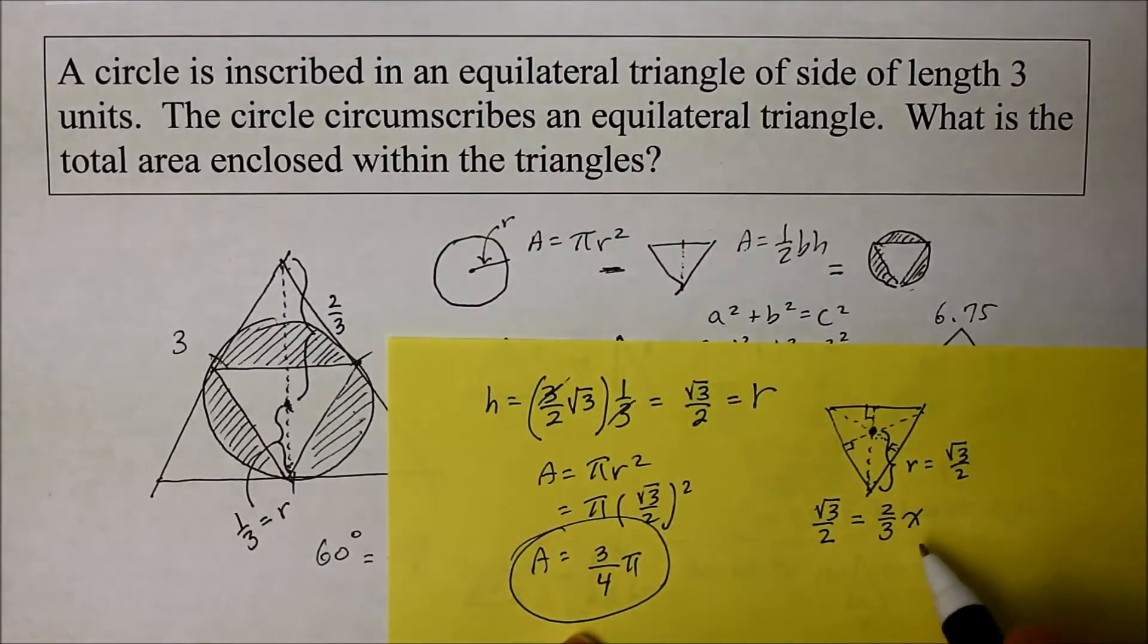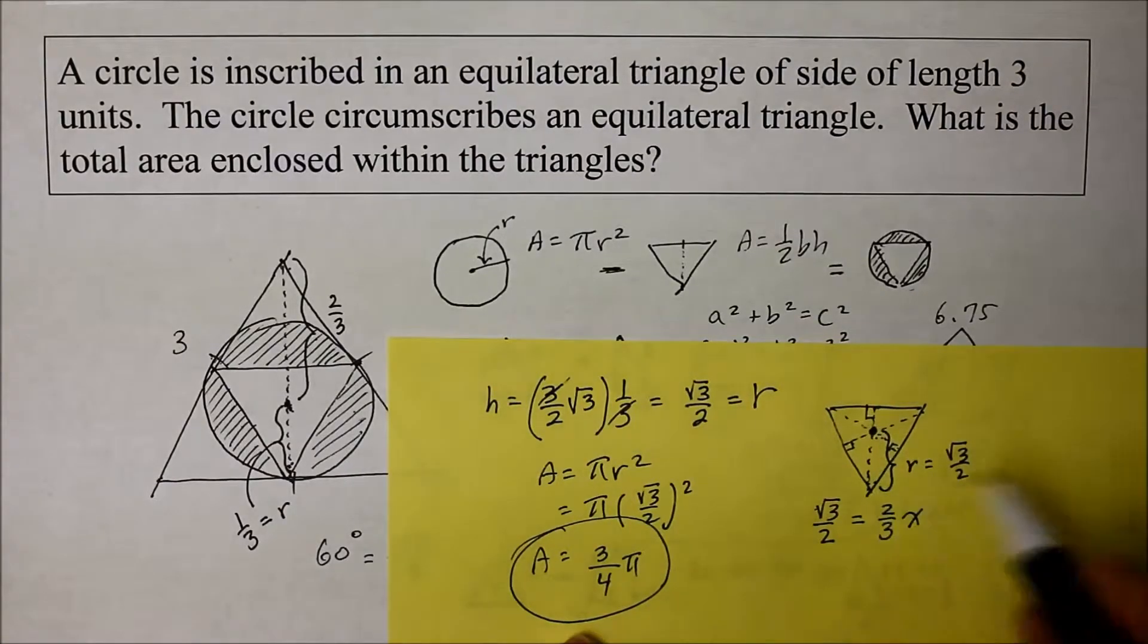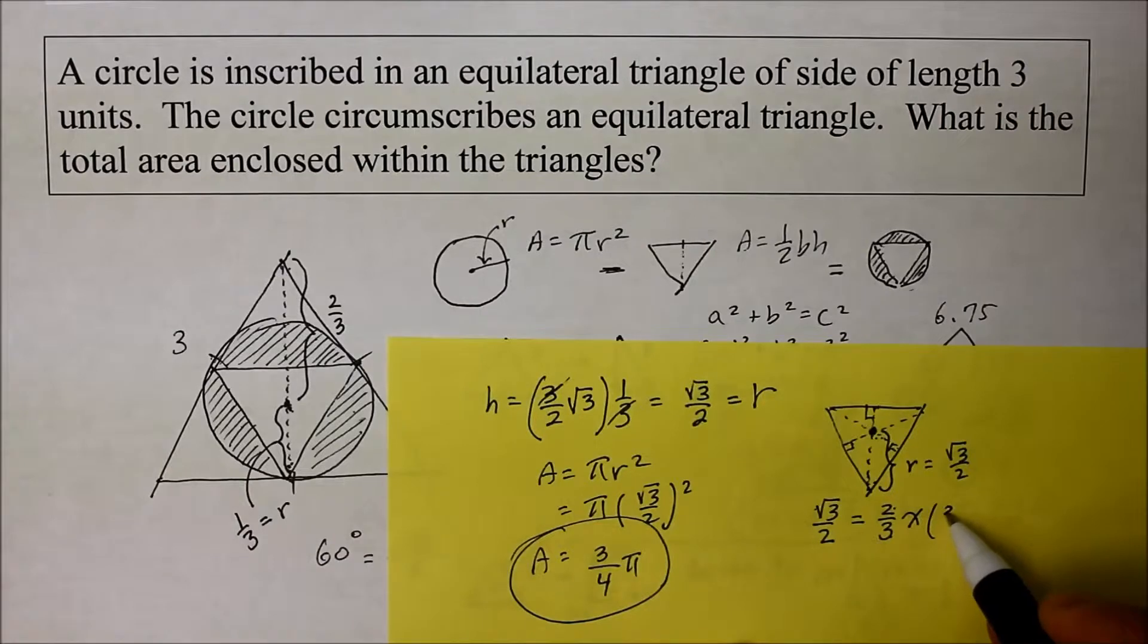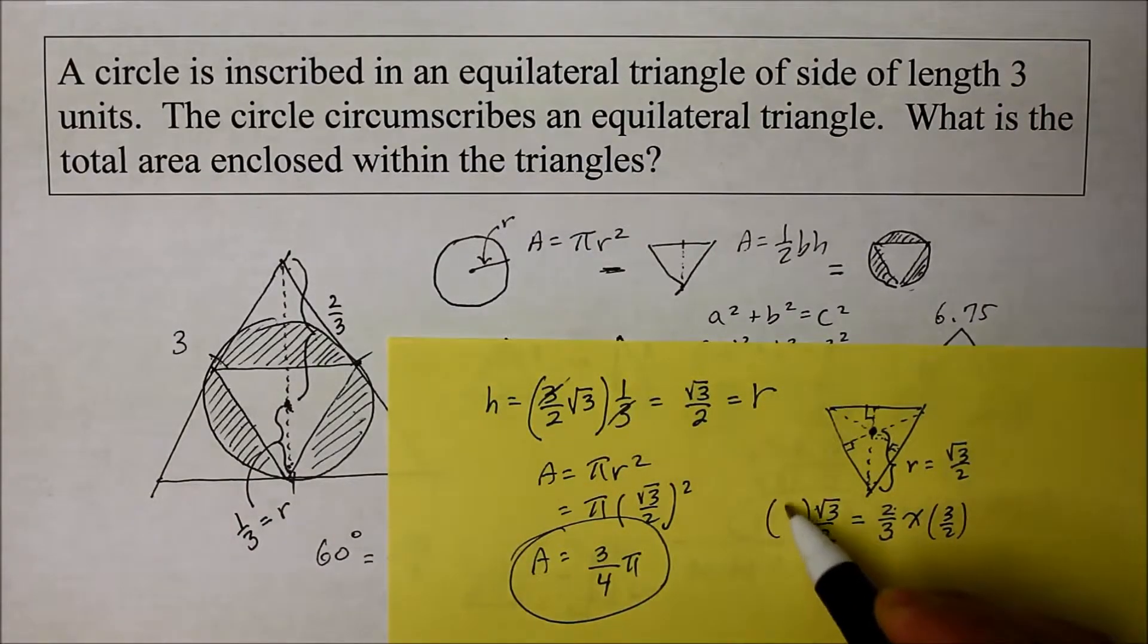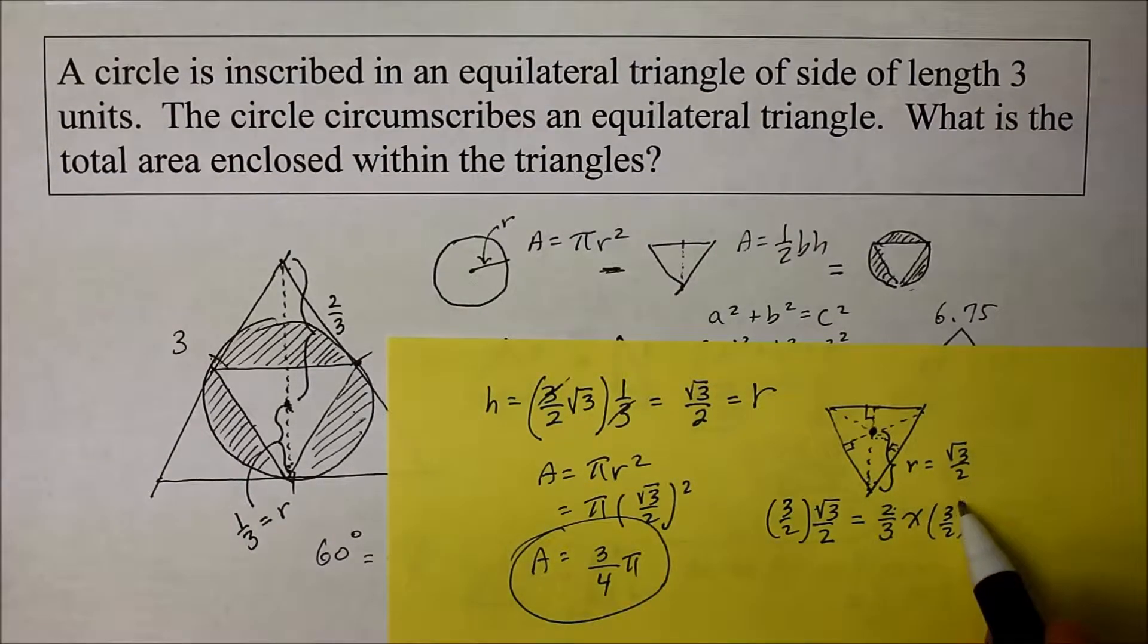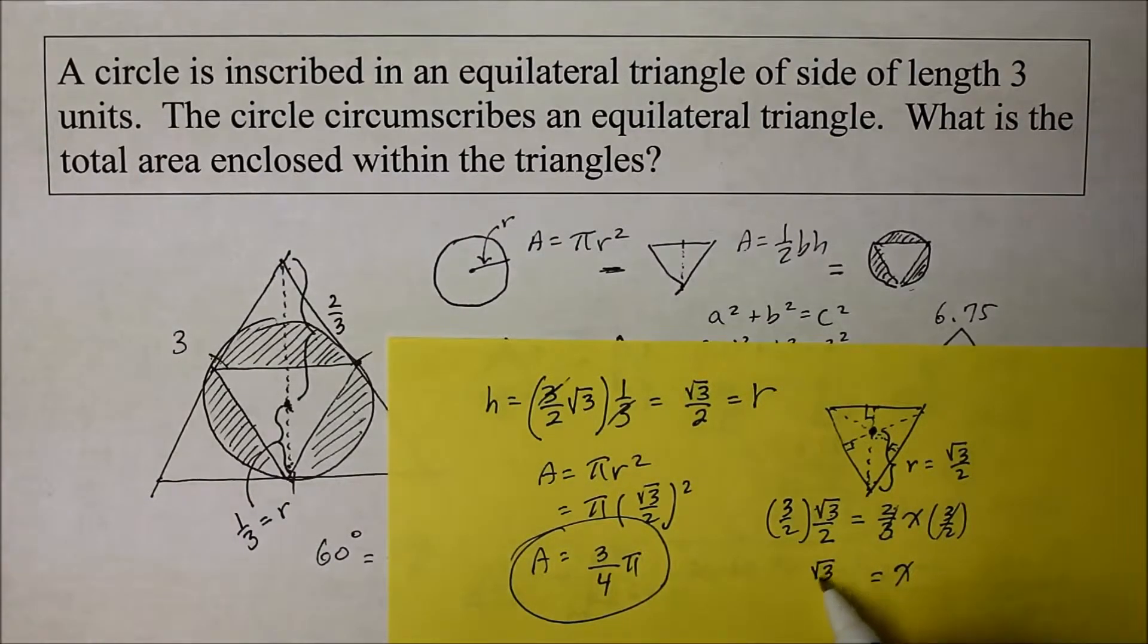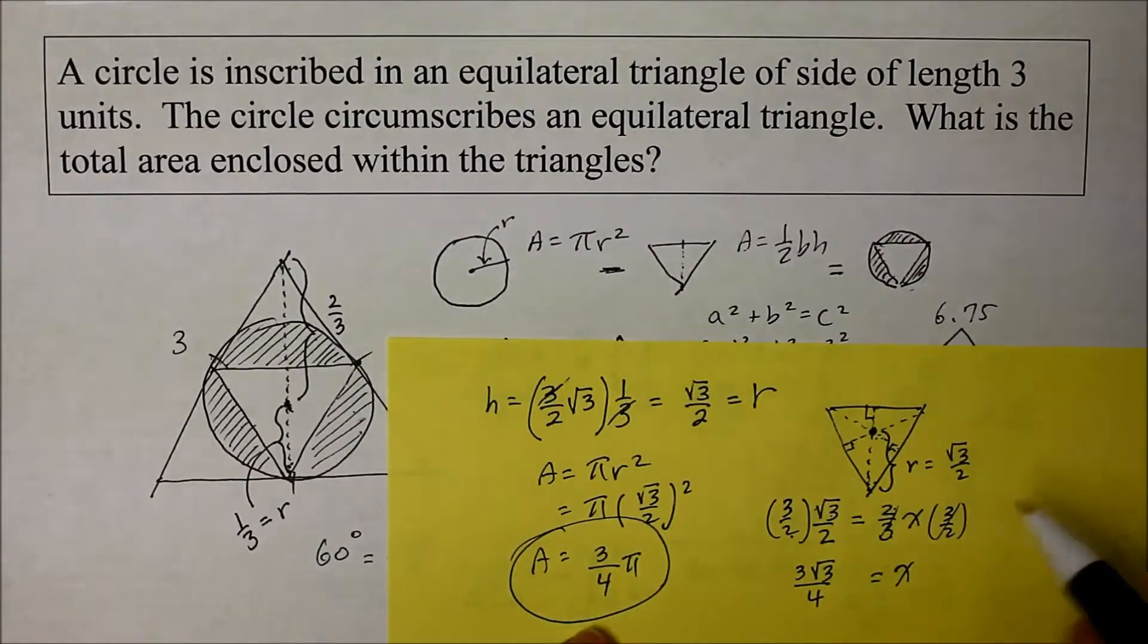And when I solve for x, I'm going to find out what the total height is. So I'm going to multiply the reciprocal of two-thirds. So that's 3 over 2. Do it to both sides of the equation. So I get x is equal to, here it comes. That's 3 times square root of 3, 2 times 2. And that is the height. And that is the height of this small triangle.